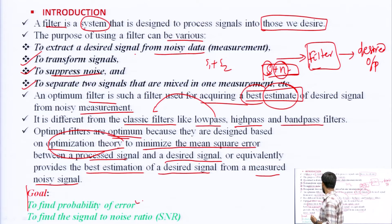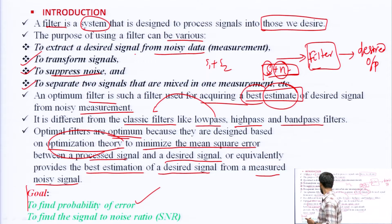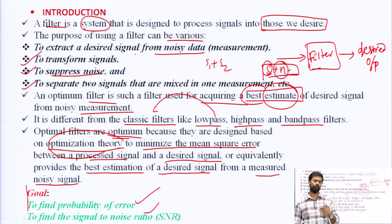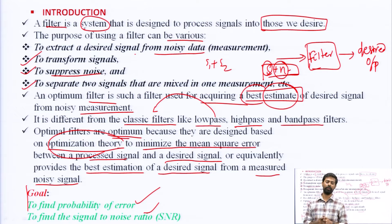In this section we will find the probability of error and the signal-to-noise ratio, because SNR plays a very important role in showing that a system is better. We are calculating the SNR as well.